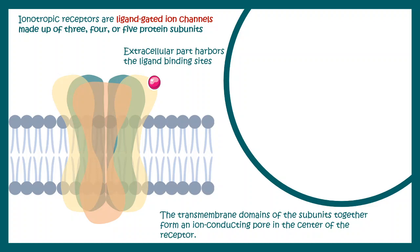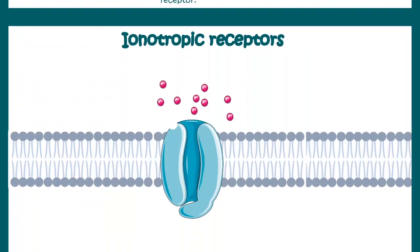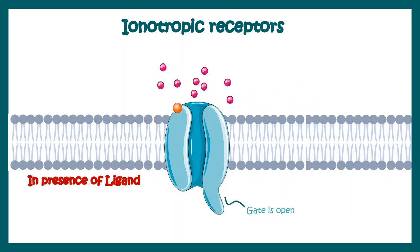Now let us look at the functioning property in a bit more detail. In a ligand-unbound state, they would be inactive and the gate would be closed. In a ligand-bound state, the gate would be open and the ion channel is conductive. So whenever there is a presence of ligand, the gate would be open. You can see the gate is closed here, but upon binding to specific ligands, the gate will open and the ions can pass across this channel. This is how the ligand-gated ion channel or ionotropic receptors work.